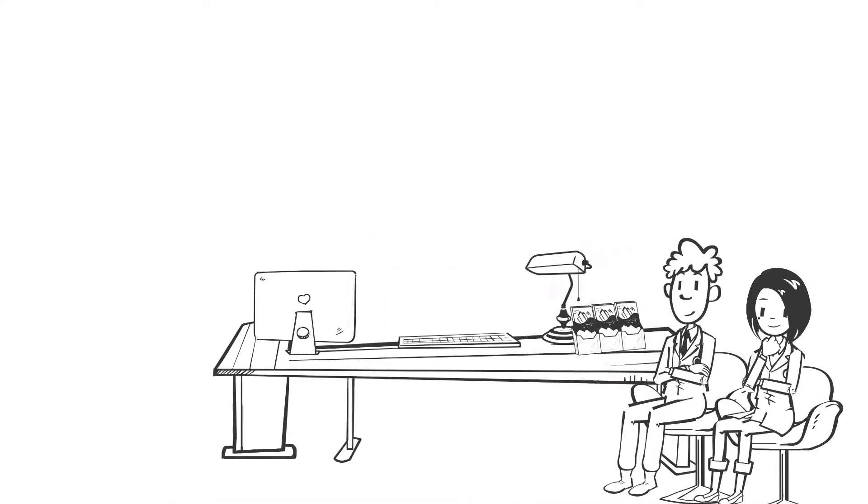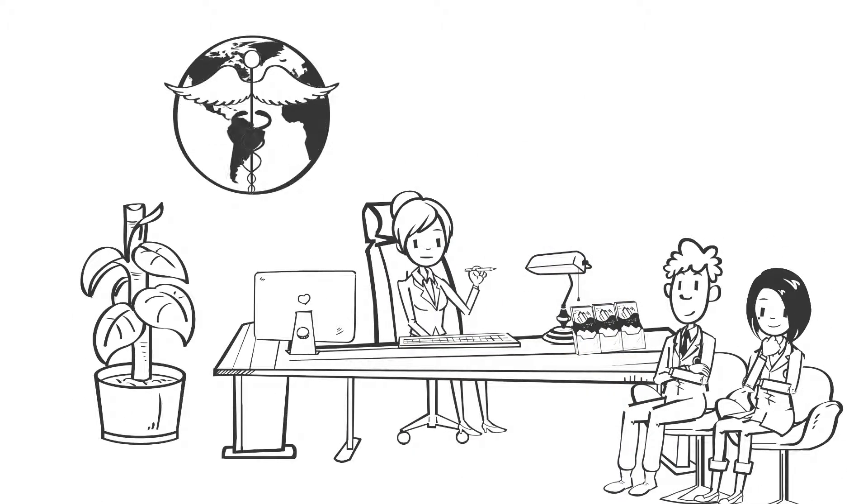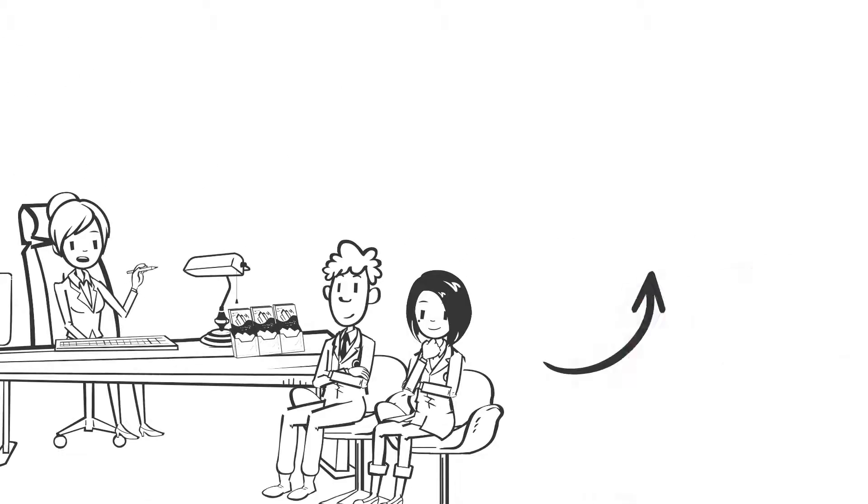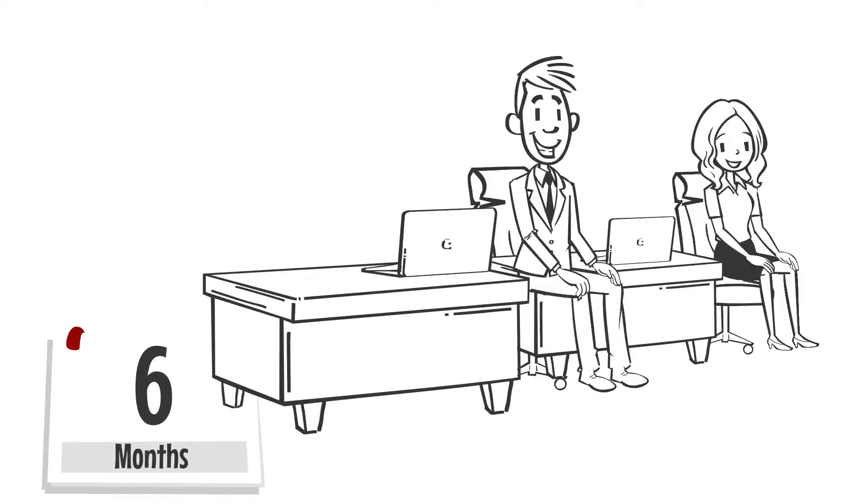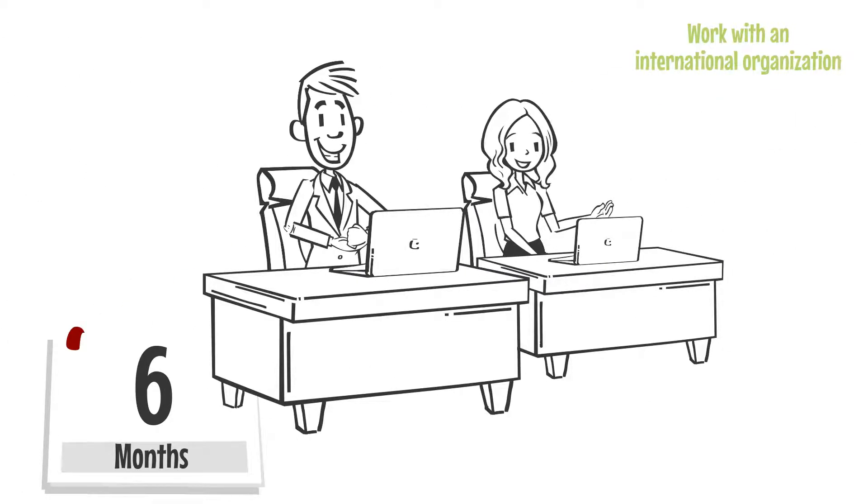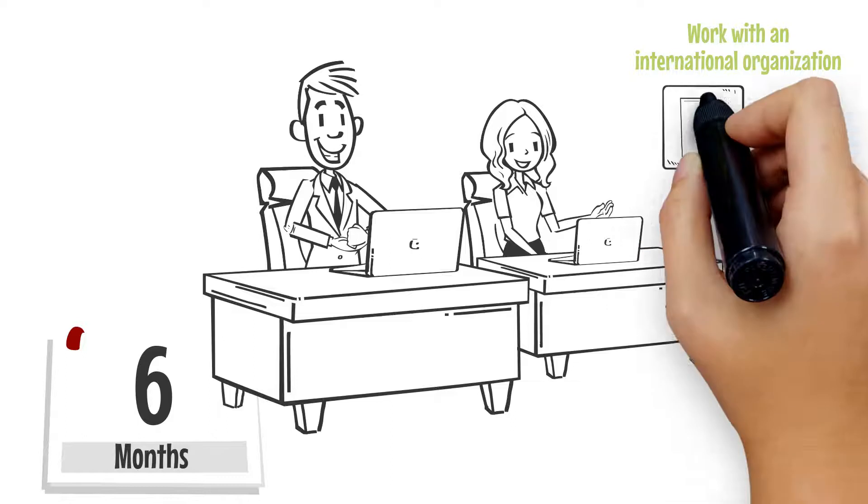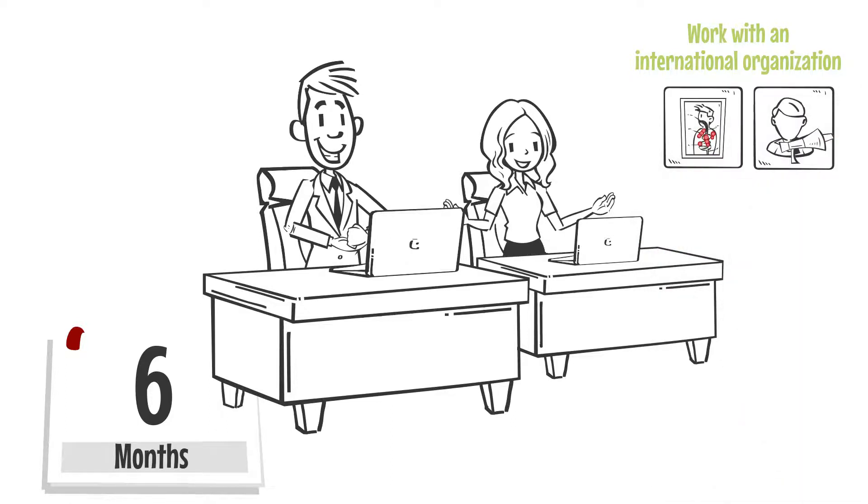Students will be placed in an organization working in global health and development for a six-month period. They may opt to work with an international organization to support programme planning and implementation in areas such as infectious disease, social policy, or gender.